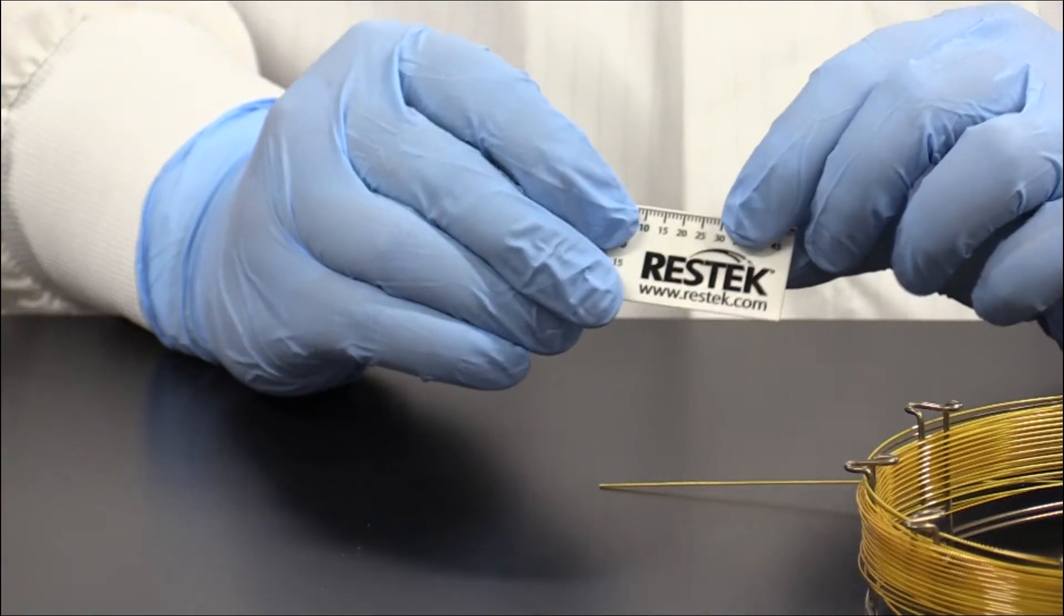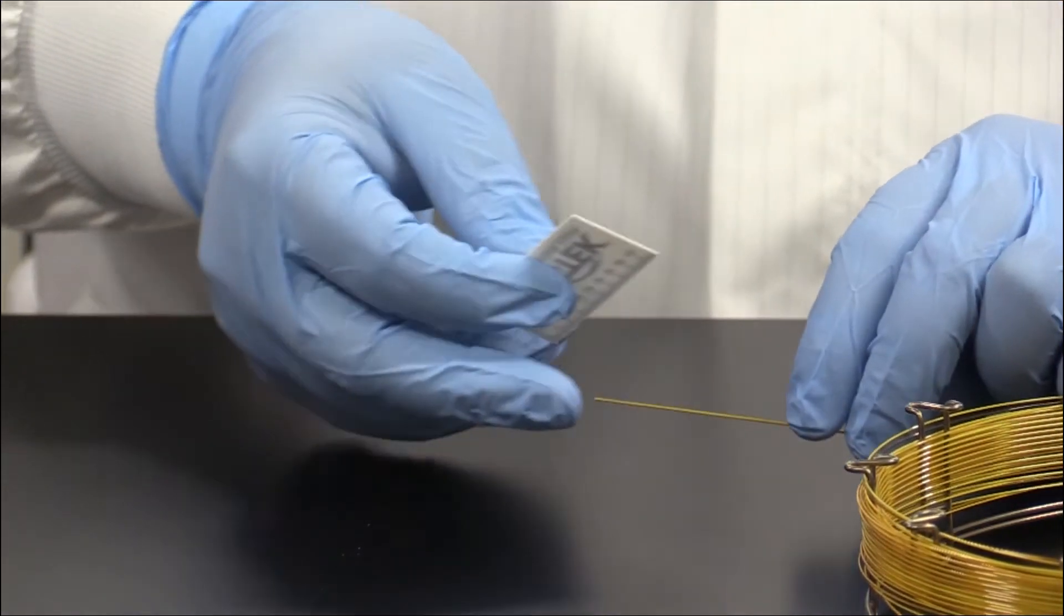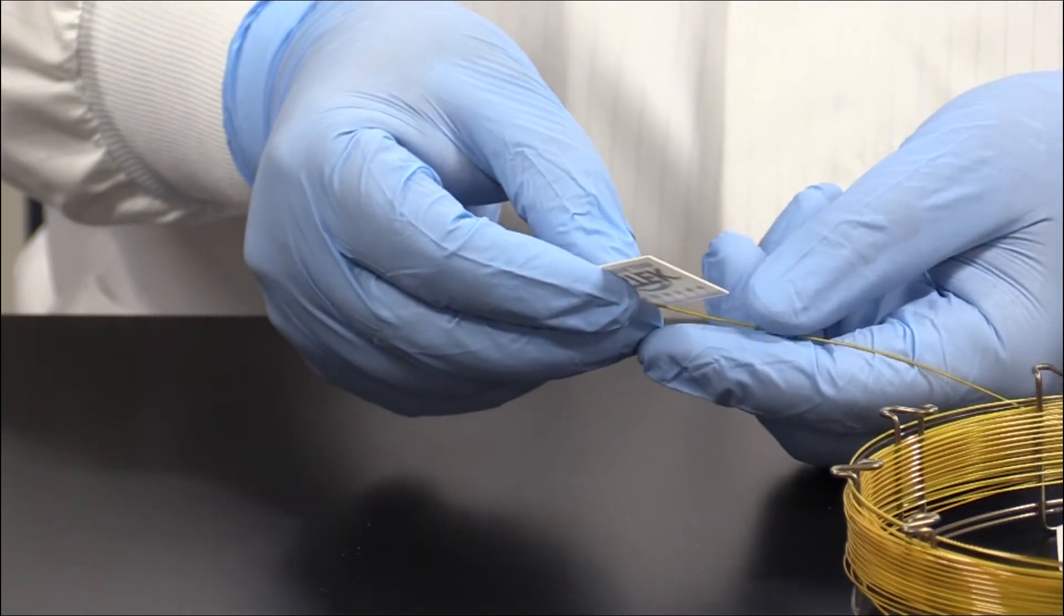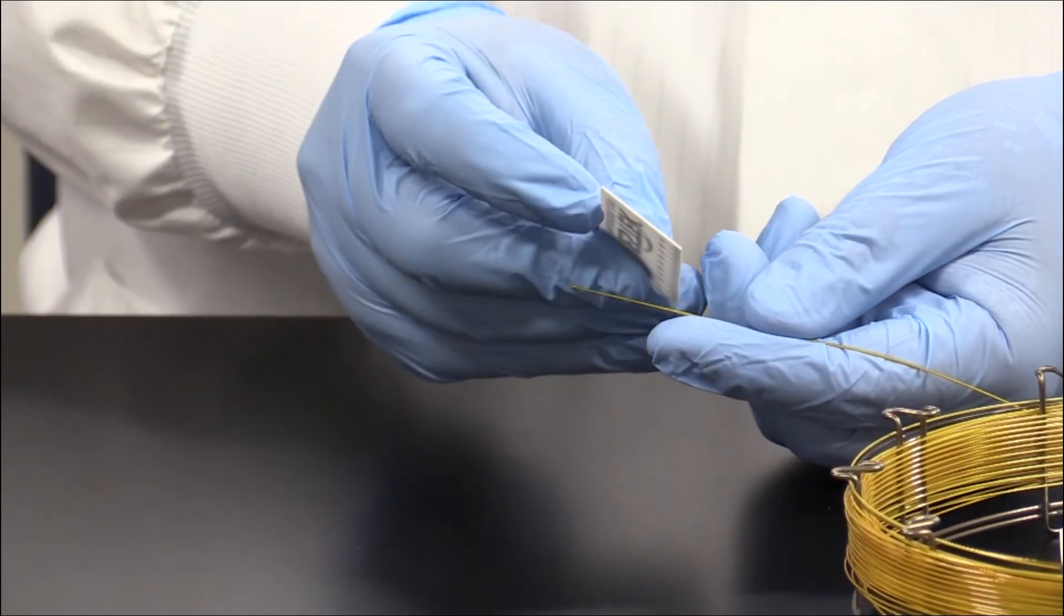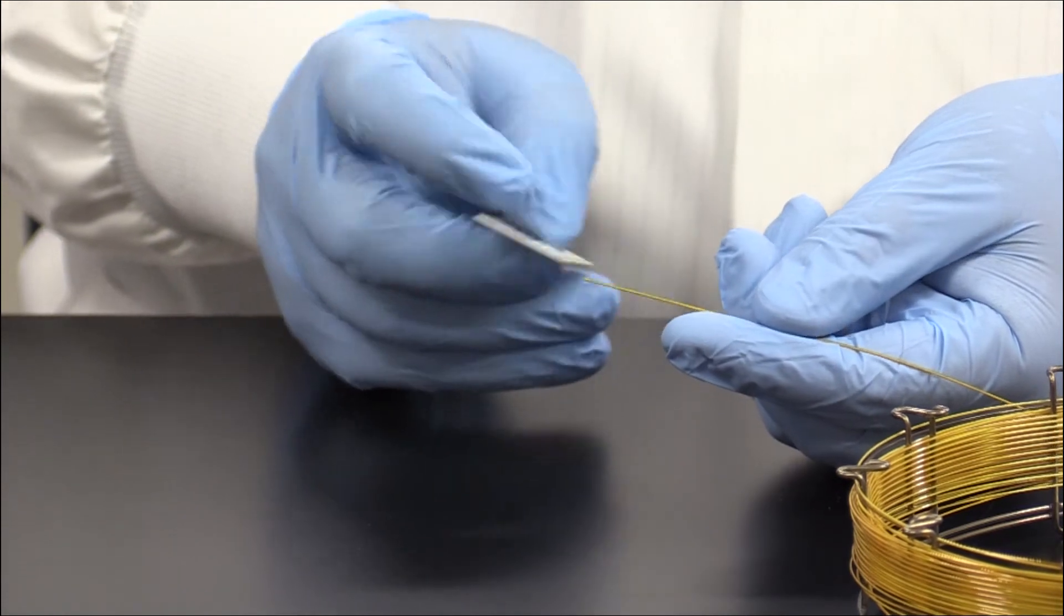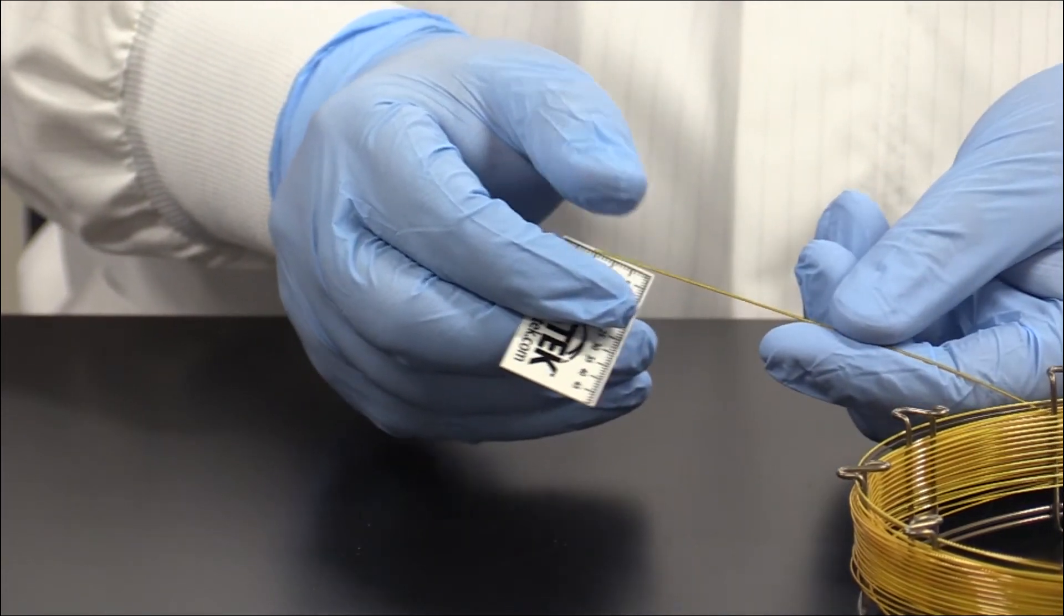And when we do that, we'll just lay the column along the length of our finger and run the ceramic scoring wafer perpendicular to the length of the column. We want to use that smooth edge to place a small score in the polyimide layer on the outside of the column.